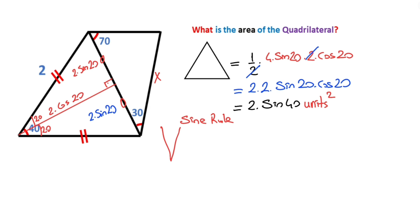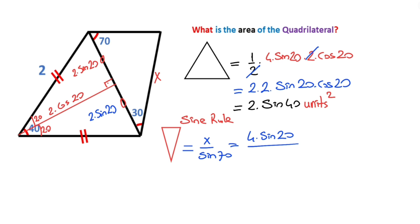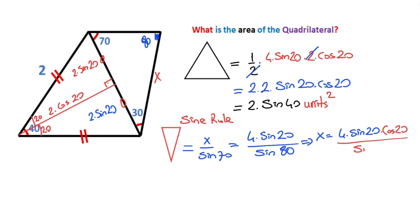According to the sine rule for this triangle: x / sin70 = (4·sin20) / sin80. The sum of interior angles is 180°, so the third angle must be 80 degrees.